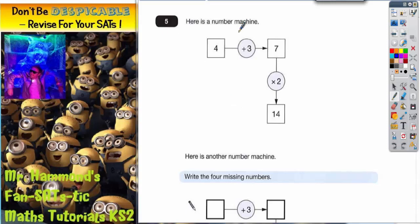Question 5 is all about number machines. If we start with 4 and then add 3, out comes 7. From 7 we're multiplying by 2, following the arrow this way, out comes 14. That's just the example.